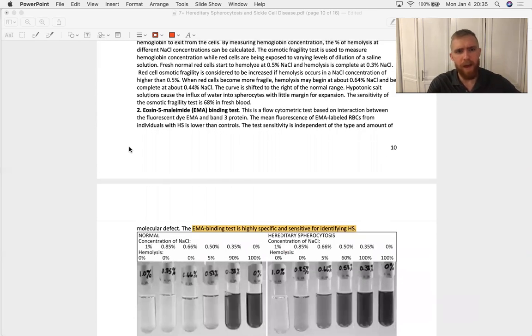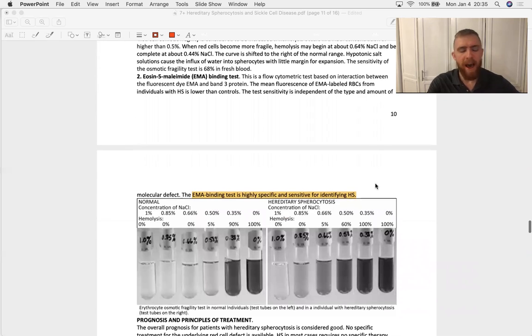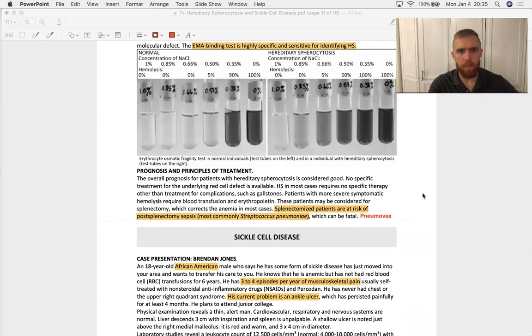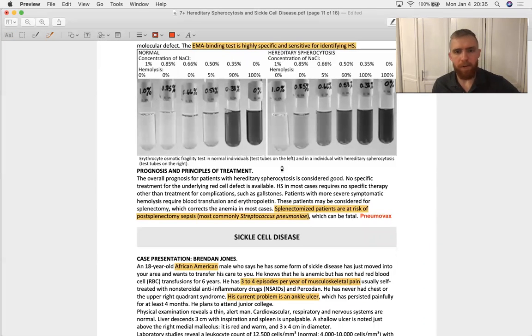There's also the eosin-5-maleimide binding test which is highly specific and sensitive for identifying hereditary spherocytosis here. This is pretty cool actually, this is results of an osmotic fragility test, and as you can see you're going to put blood samples in varying concentrations of saline, and the patient with spherocytosis, their blood sample starts popping, you can see some clouding up of that sample at 0.85 concentration sodium chloride.